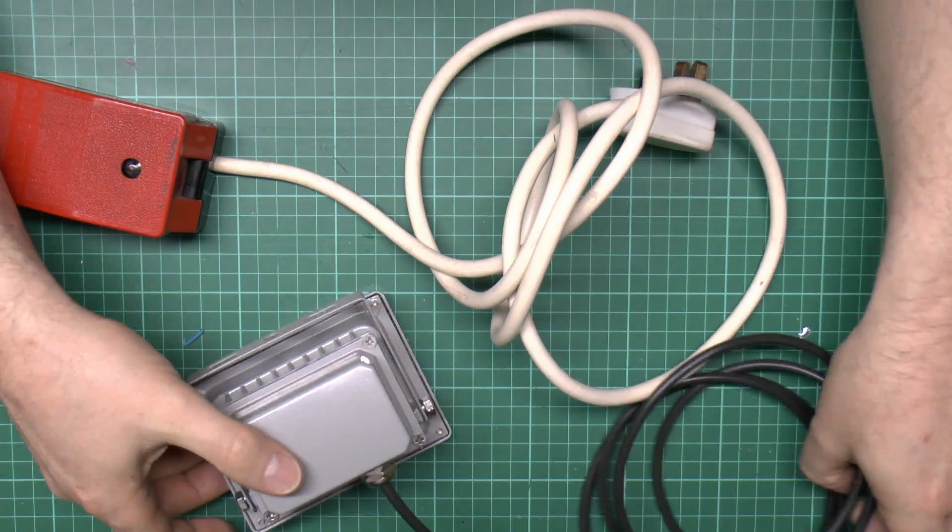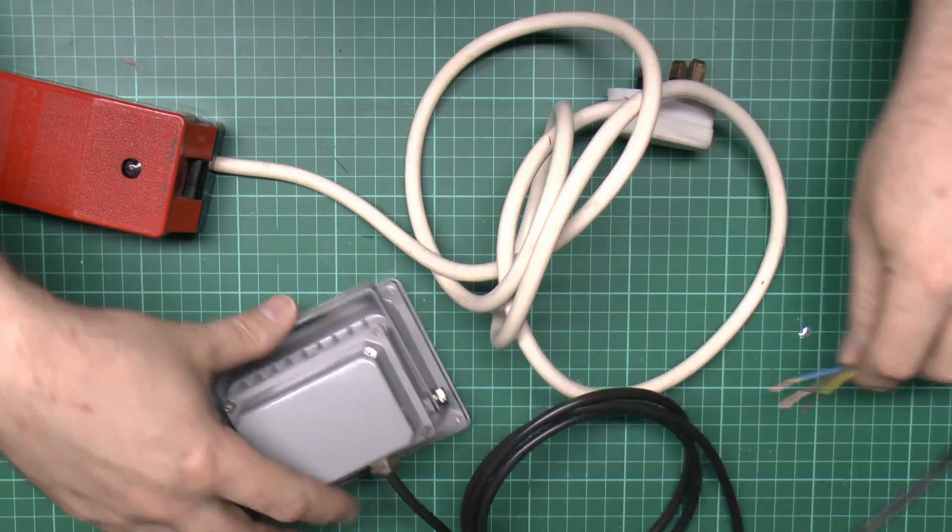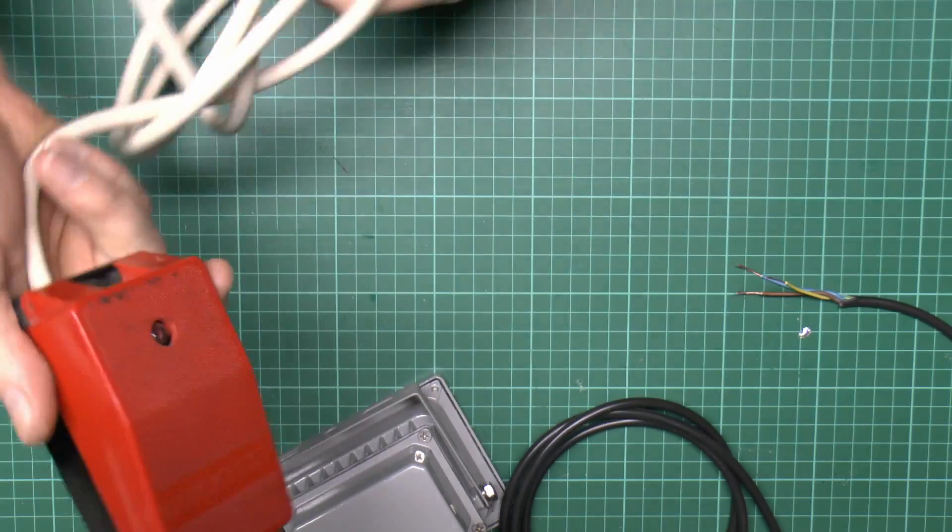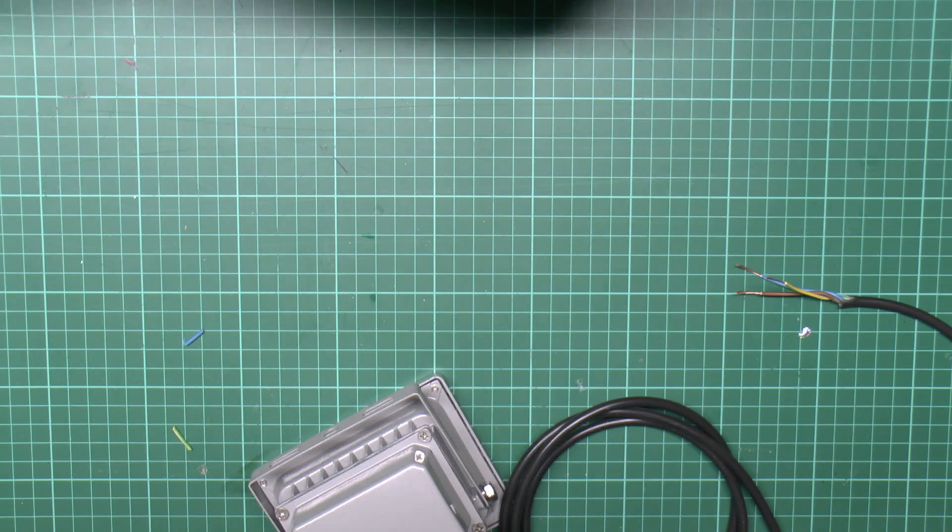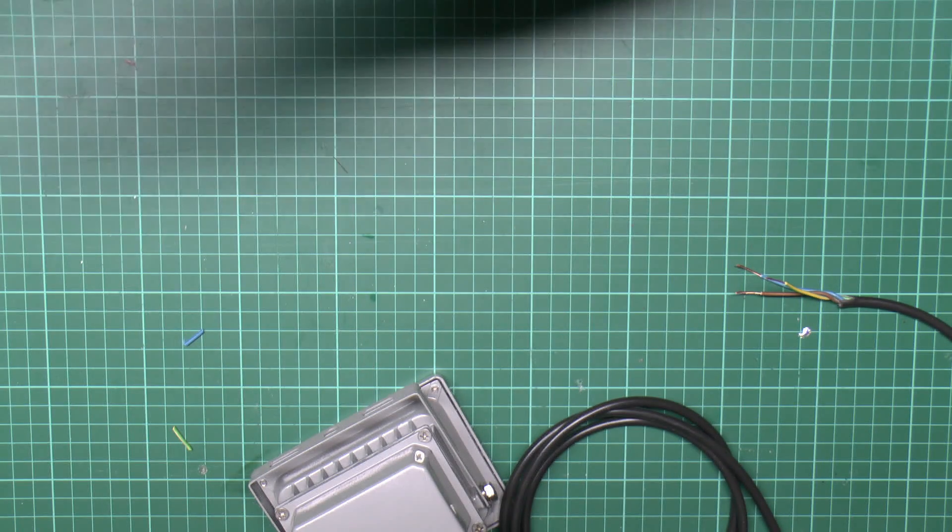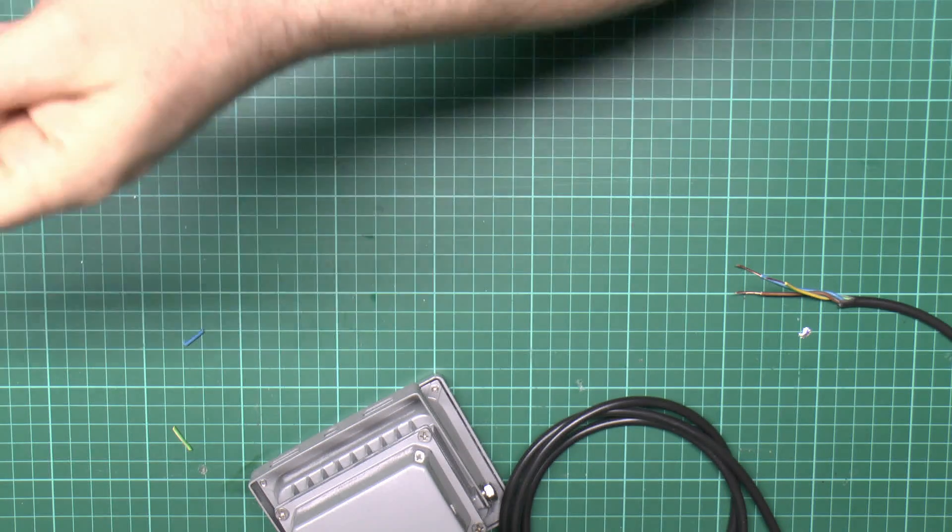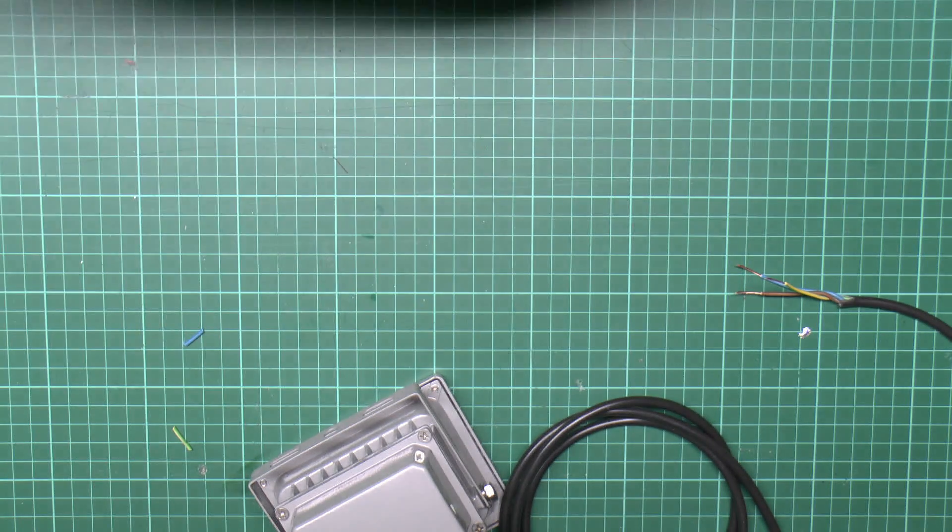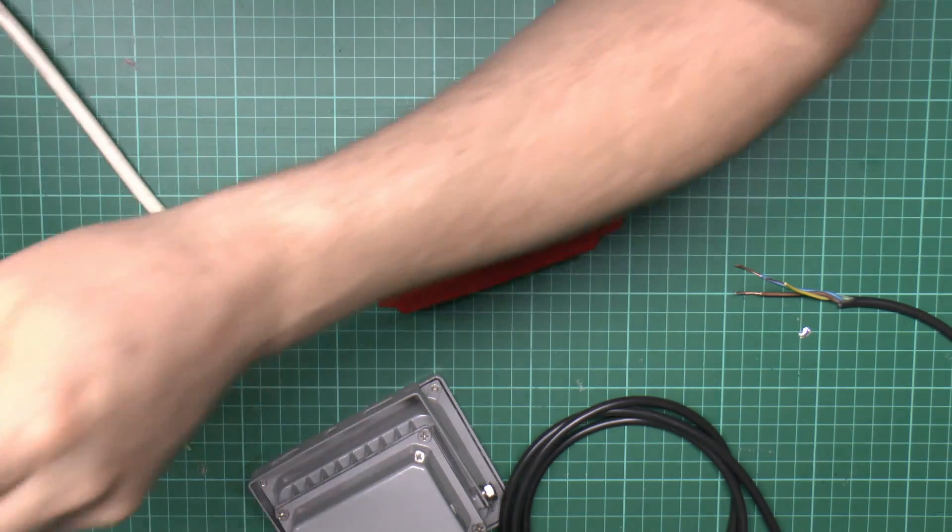Once we've done that we'll just need to put those screws back in. That's all reassembled there. I've just stripped the end here to get the wires there for testing. We'll use this connection block to connect that up temporarily to make sure that it's first of all safe and secondly it does actually work. It's pretty embarrassing getting to the place to have it installed and spending an hour fixing it up on the wall only to find that it's broke because we didn't reassemble it properly.